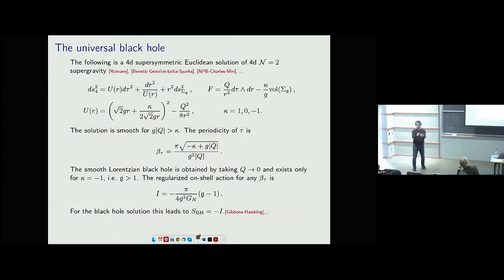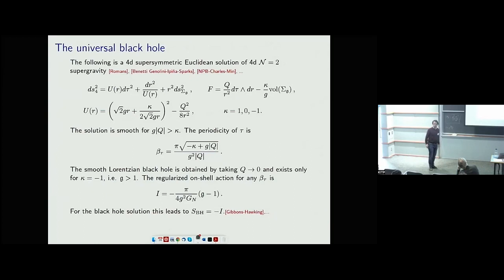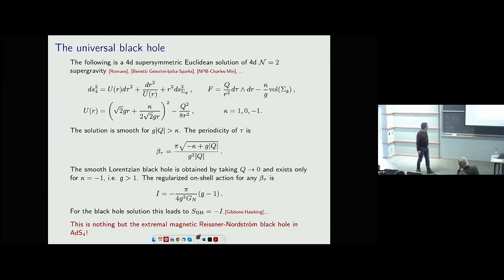The way you keep supersymmetry here is different from the superconformal index, where you preserve SUSY by fibering the S¹ over the S². Here I'm doing a twist on part of the space — it's an easier object, but it's still a black hole. And since we know from 50 years ago that the on-shell action should be minus the entropy, we have found the entropy of this black hole. In this case I don't have to do a Legendre transform, since the ensemble where the magnetic charge is known is the right one.